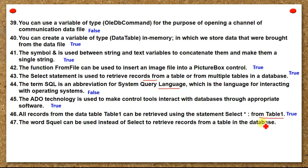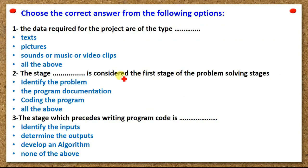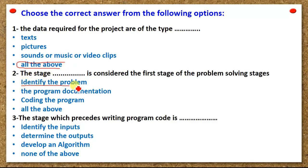Choose the correct answer: One — the data required for the project are of the type: texts, pictures, sounds or music, video clips, or all of the above. Two — the stage considered the first stage of the problem-solving stages is: identify the problem, program documentation, coding the program, or all of the above.